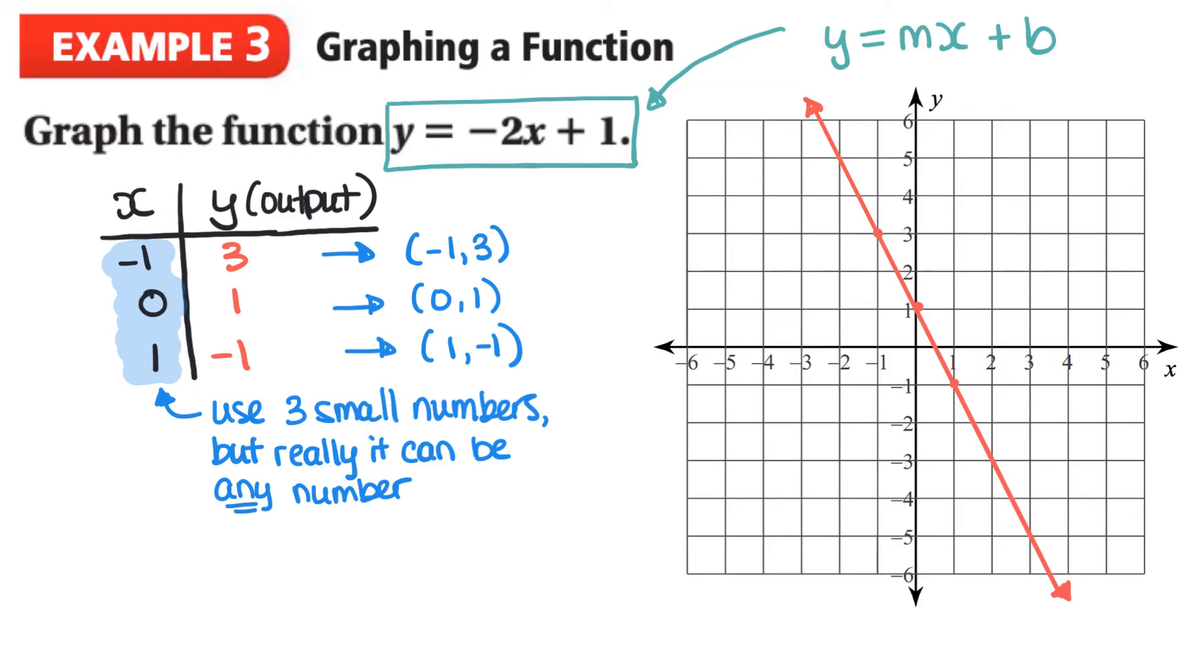And we can double check our graph since 1 is our Y intercept. Here it is. And negative 2 is our slope or our slope is negative 2 over 1. From our graph we can see from our Y intercept we can then now use our slope. So going down 2 and to the right 1 we see we have this point which happens to be on the line.